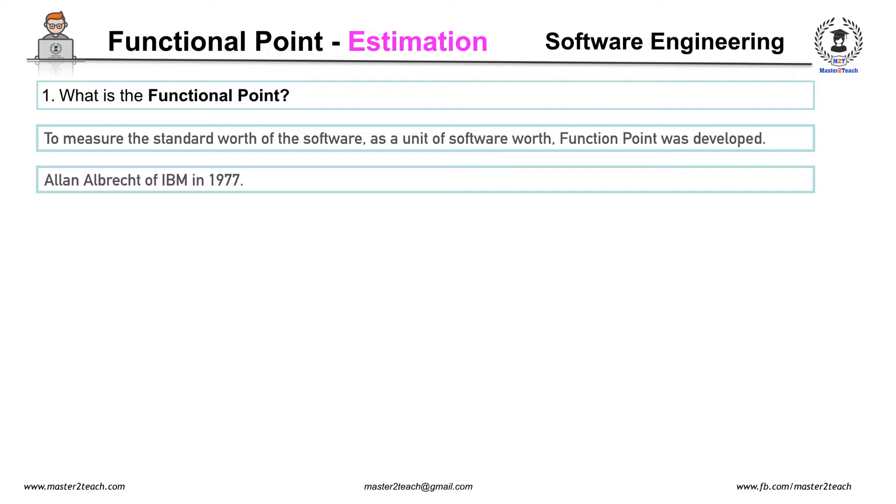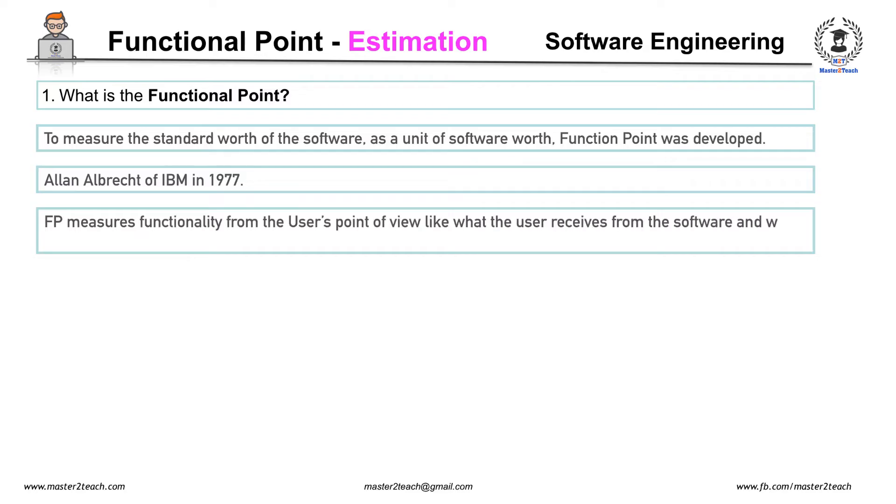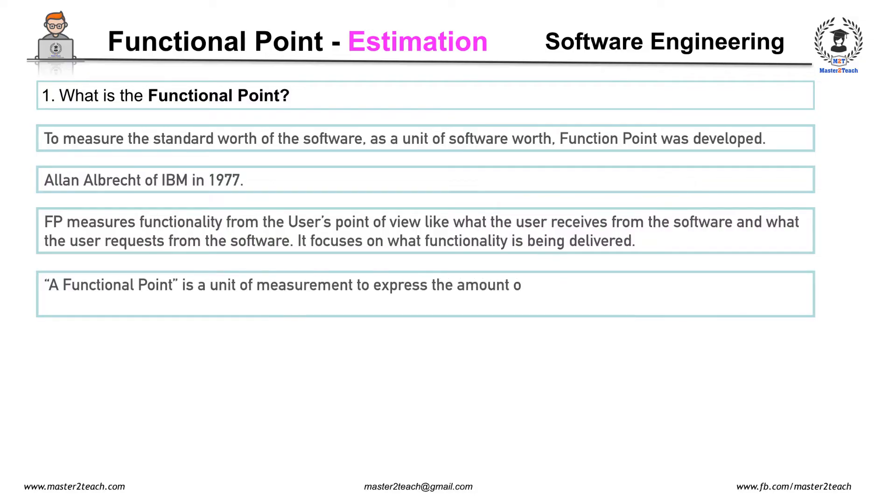It is used effectively as a means for measuring the functionality delivered by a system. Functional Point measures functionality from the user's point of view, like what the user receives from the software and what the user requests from the software. It focuses on what functionality is being delivered. According to the wiki, a Functional Point is a unit of measurement to express the amount of business functionality an information system provides to a user.